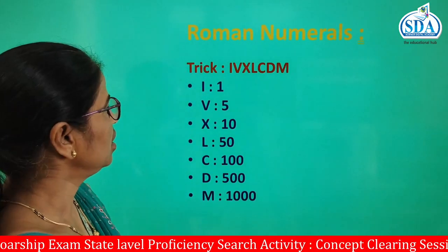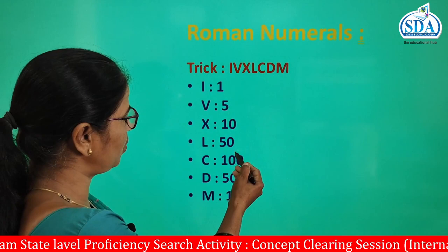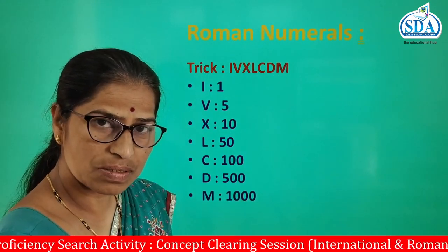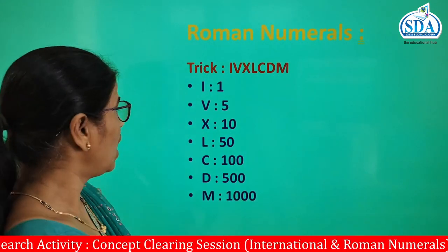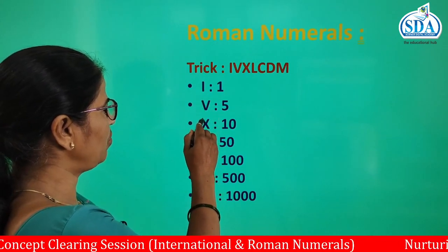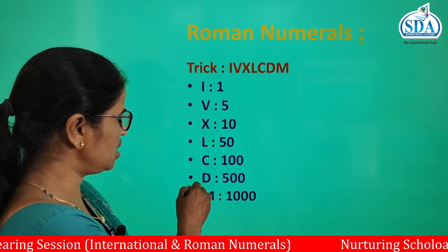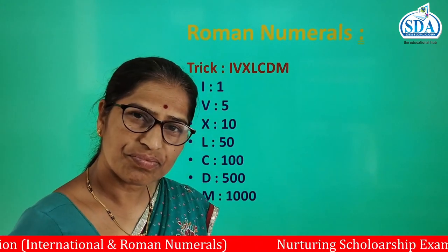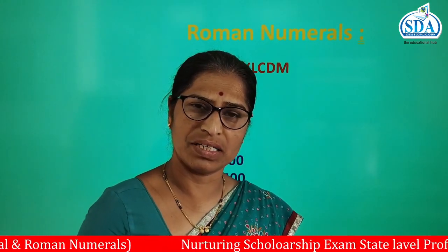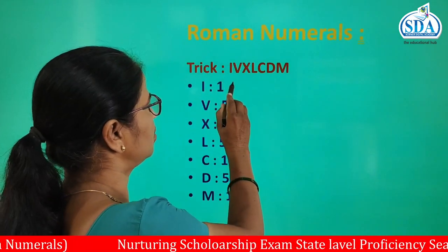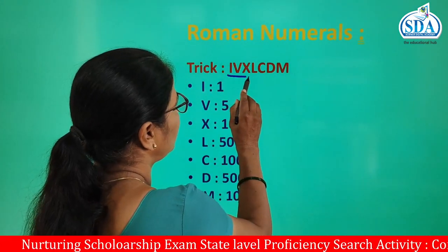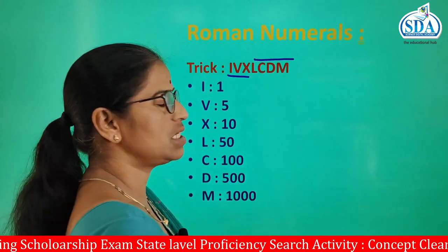That means the numbers 1, 5, 10, 50, 100, 500, and 1000 are shown by the Roman method like I, V, X, L, C, D, M. You can simply learn and remember this by a trick — that is IVX and LCDM.